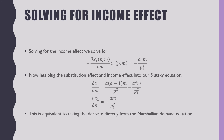Solving for the income effect, we put a negative sign in front of the partial derivative of our Marshallian demand for good x1 with respect to income and multiply that by our Marshallian demand for good x1. Putting this together with the substitution effect, we get our Marshallian demand. Notice how these two effects summed together is equivalent to deriving the Marshallian demand directly from a change in price.